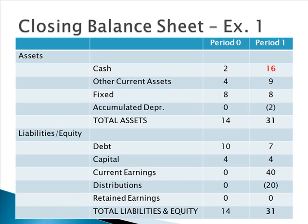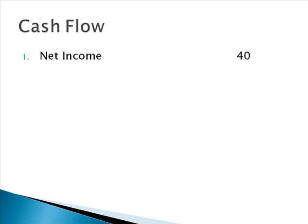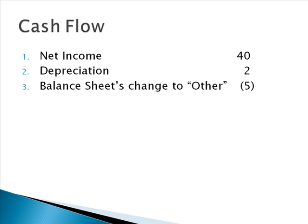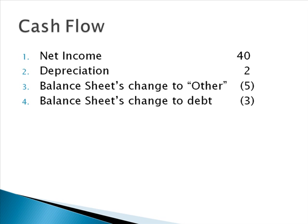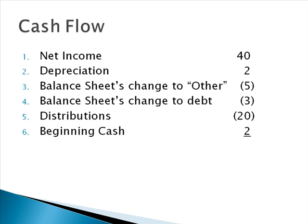Before we stop there, let's do a check to make sure that 16 is indeed the correct number by walking through a cash flow. We know we have net income of 40 and depreciation of 2. The balance sheet's change to other was 5. The balance sheet's change to debt was 3. There have been distributions of 20, and there was beginning cash of 2. Adding those values together, we arrive at 16 — this balance sheet is correct and we're ready to move on.